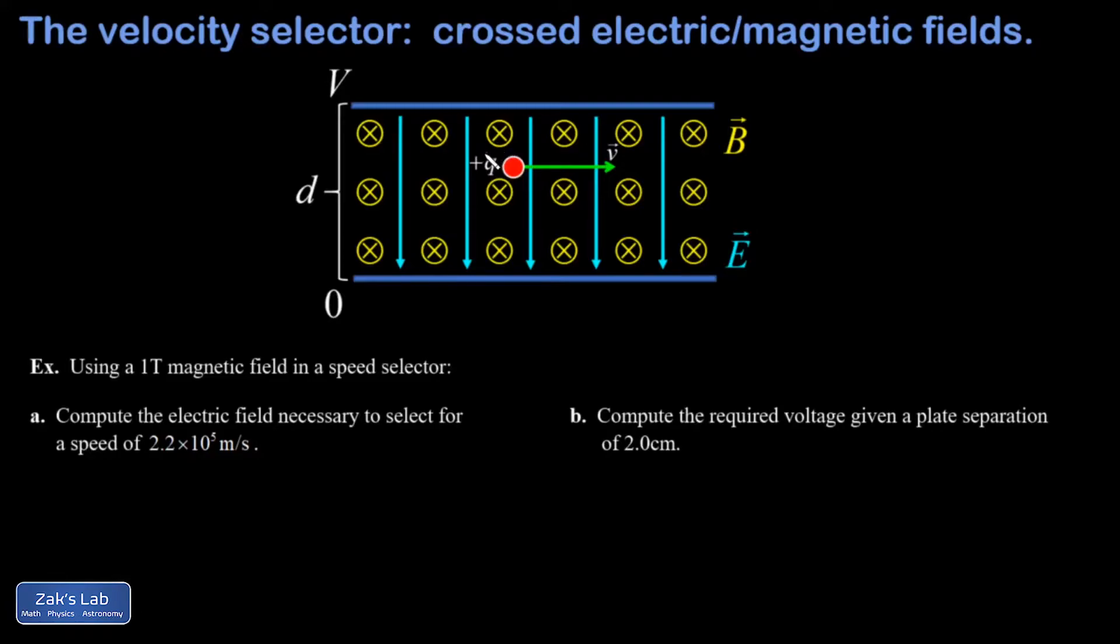So in the picture, we've got a charged particle with a charge of plus Q passing through crossed electric and magnetic fields. The electric field is pointing down and the magnetic field is pointing into the page, so that's what the Xs mean.